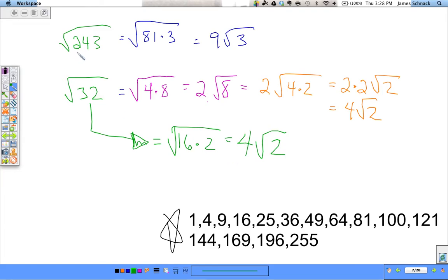Bottom line, whenever we have a radical as our answer, whenever we have an irrational number, and whenever we have a square root where the number isn't on our list of perfect squares, we want to simplify that as far as we can go.